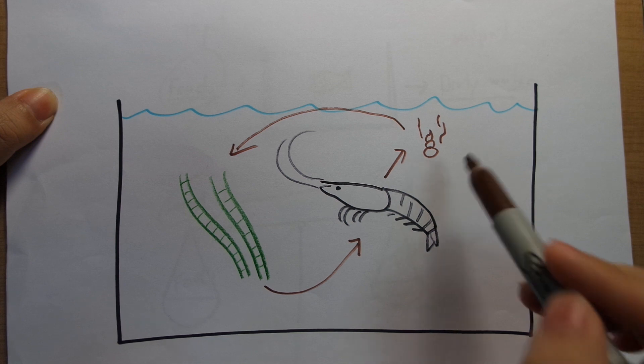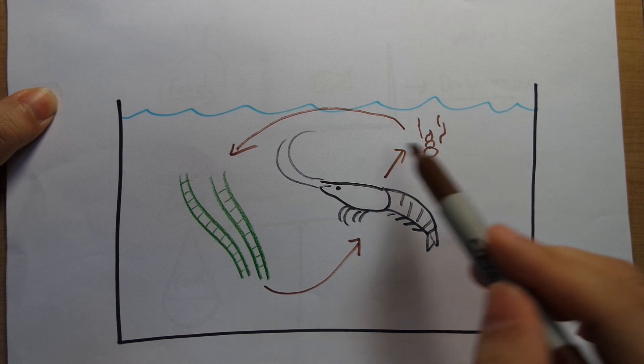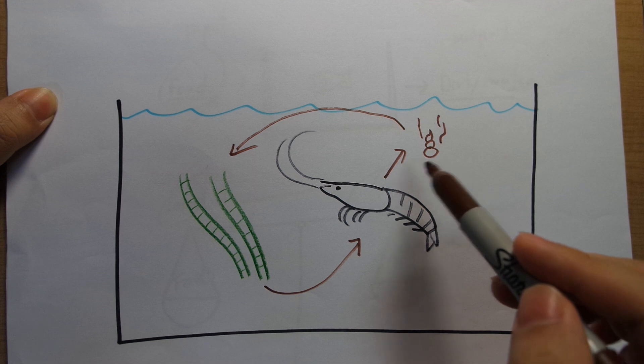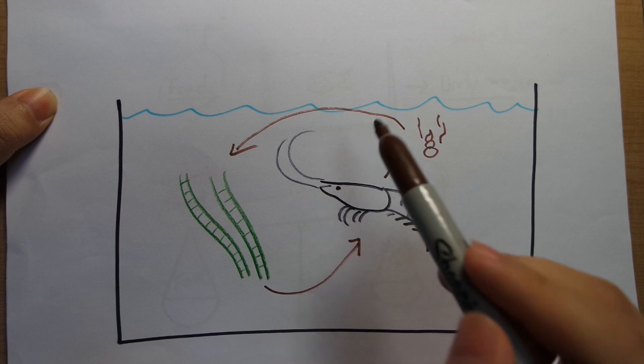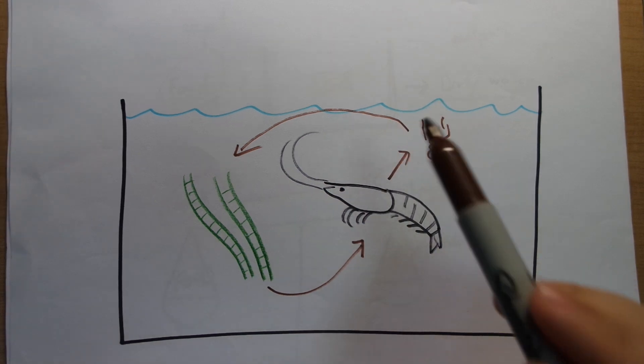And the answer is no, because nothing's going in, so you don't need to take anything out. As long as you have a balanced population of algae and shrimp going on inside this tank, you would not need water changes. So it's all about balancing input and output.